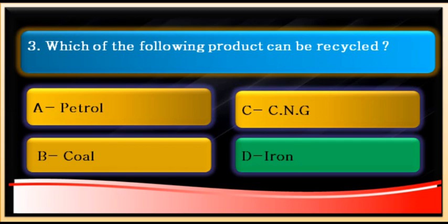Question number three: which of the following products can be recycled? Most minerals can be recycled — iron, copper, gold can all be recycled. The answer is D: iron. Petrol, coal, and CNG cannot be recycled; they get exhausted after use, making them exhaustible resources. Although iron is also exhaustible, it can be recycled, so keep in mind that minerals are generally recyclable.